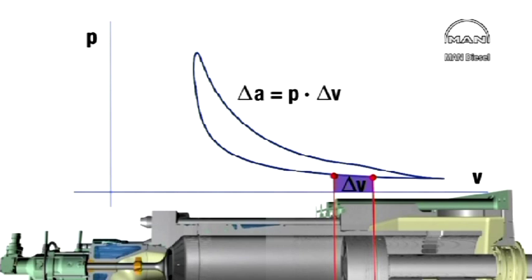And the same applies to every single part of the compression curve. That's to say that the whole area below the compression line represents all the work that the piston must perform to compress the air in the cylinder.